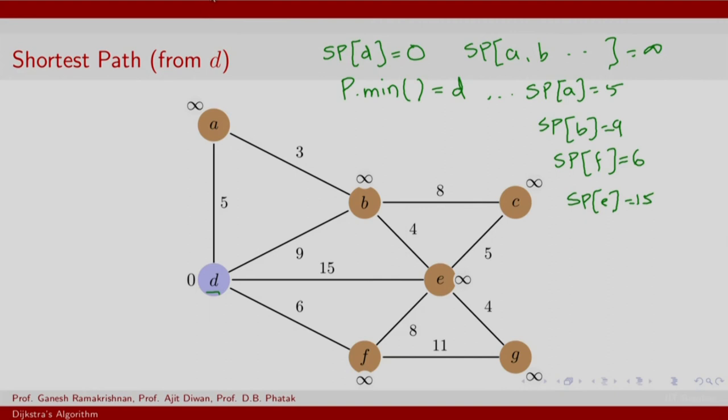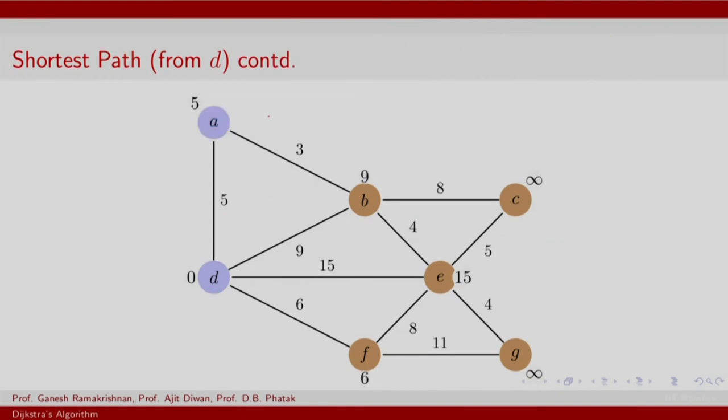You are going to update the min heap. The next P dot min should get you A with its corresponding value 5. Thereafter you will again update all its neighbors. Yes we got A, and now what you have done is updated the weights of its neighbors. You find that the new path through A gives a weight of 8 which is less than the earlier value of 9. A has only one neighbor which is not yet explored because the other neighbor is D itself.